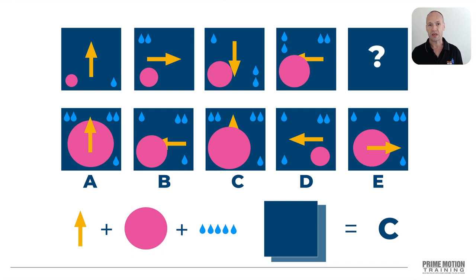So if you haven't ended up with C, a couple of things that may have gone wrong. If we look over here at A, if you picked A, there's a couple of reasons why it's not A. The first is that pink circle is very, very big, in fact it's bigger than the pink circle in C. Now if you looked at number four in the top row, the fourth box along,